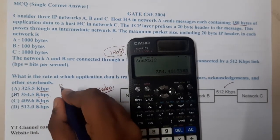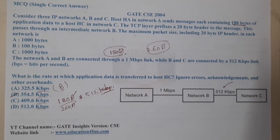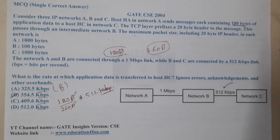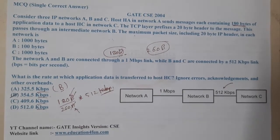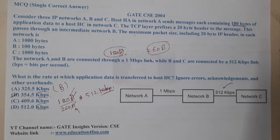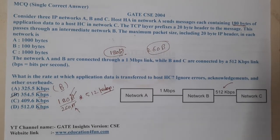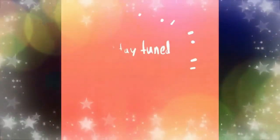The final result is approximately 354 kbps, so option B is the correct answer. This is essentially throughput — useful data divided by total data multiplied by bandwidth. The approach here is really important for these types of questions. I hope everyone got a clear idea; in the next lecture we will continue with the next question. Thank you, like share and subscribe.